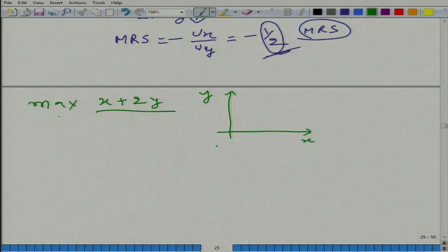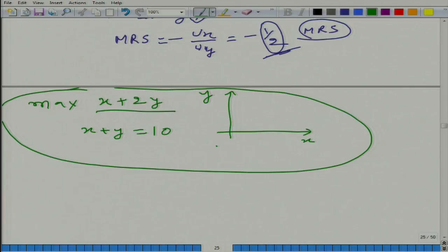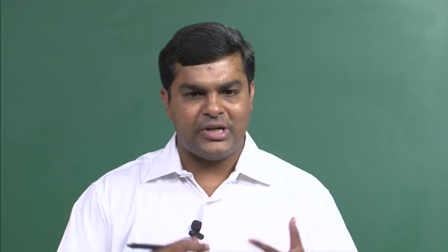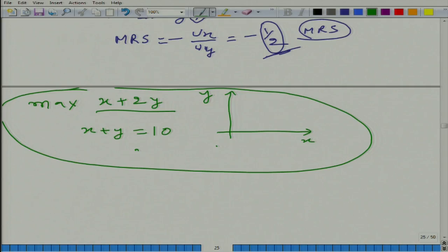The idea is to maximize this utility such that x plus y is equal to 10. This is the problem in the mathematical way. Let us go in the opposite direction and get the economic problem out of it. We should also add that x is greater than or equal to 0 and y is greater than or equal to 0.